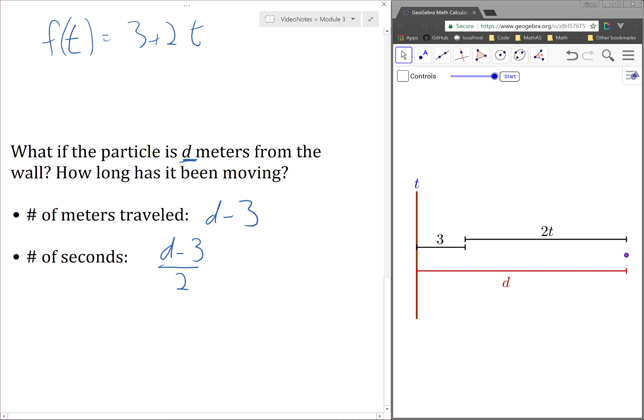Or in this case, we can actually write the formula t equals d minus 3 divided by 2.